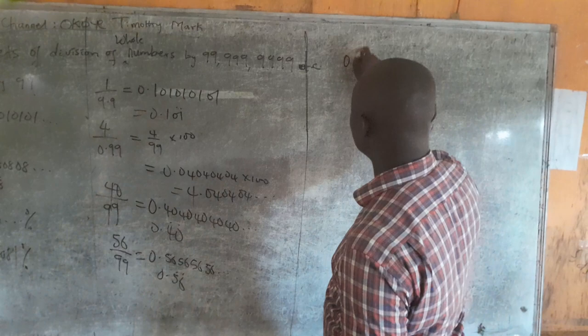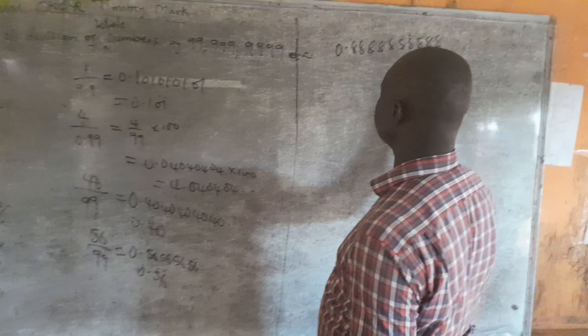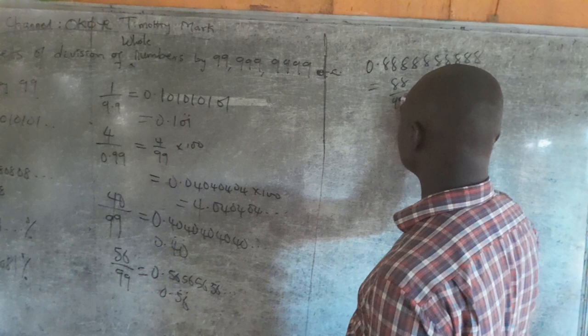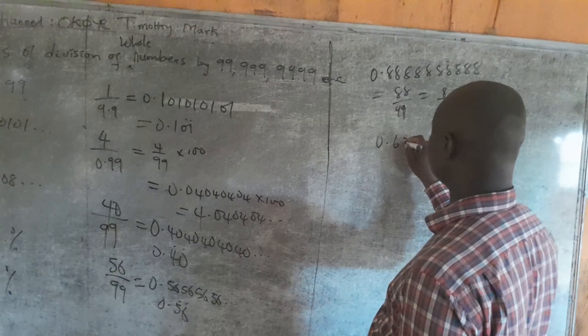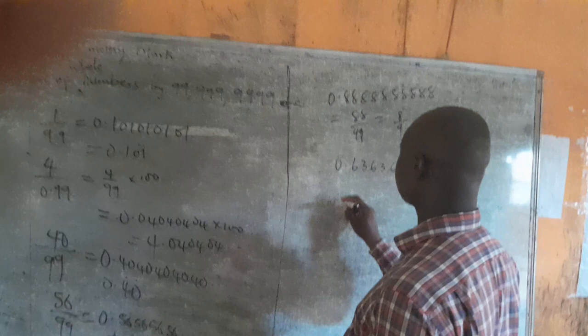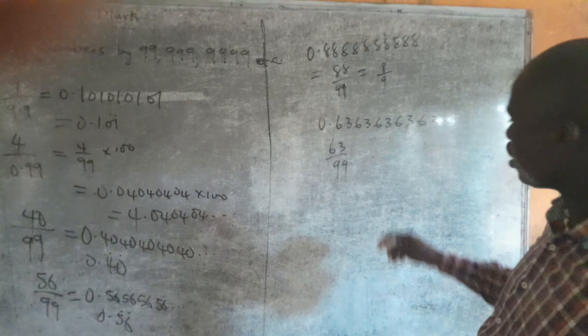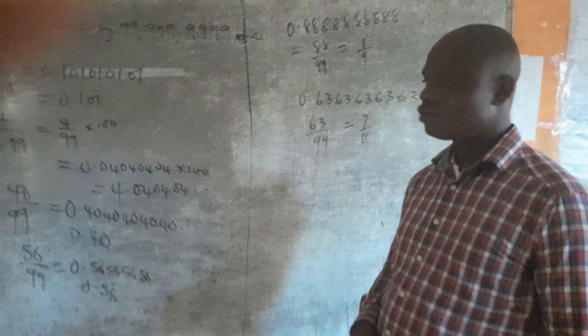So if I'm given 0.888888..., I would say this is 8 over 99, and if you take it to the simplest ratio it will give you 8 over 9. And if I have 0.636363..., it's 63 over 99, and in simplest ratio that gives you 7 over 11.